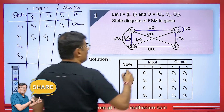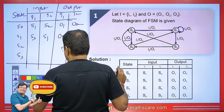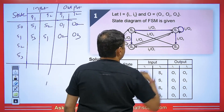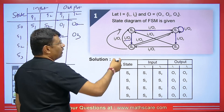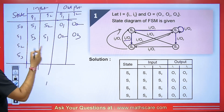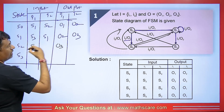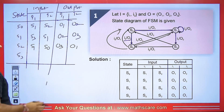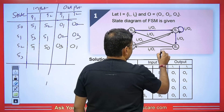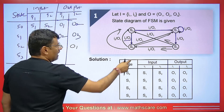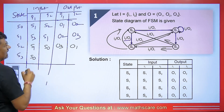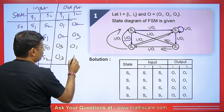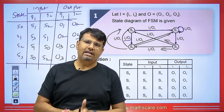For S2: one arrow goes to S1 and another goes to S0. When S2 goes to S1, input I1 gives output O3. When S2 goes to S0, input I2 gives output O1. For S3: I1 goes where S3 goes to S0, giving output O3; and the arrow going to S2 has input I2 and output O1. This is how we make a table.